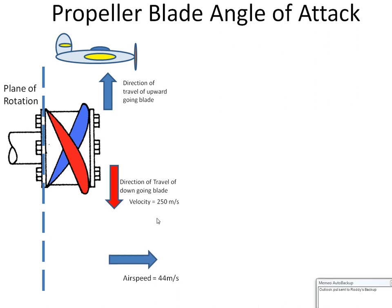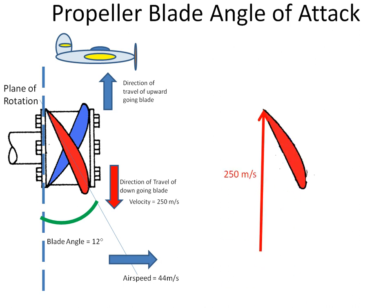Let's also assume the aircraft has an airspeed of 44 meters per second and that the blade angle is 12 degrees. Reproducing this over on the right hand side, there's my velocity in the plane of rotation due to the velocity of the blade. There is the vector due to our airspeed and there is my resultant air flow. And we can calculate that to 253 meters per second.